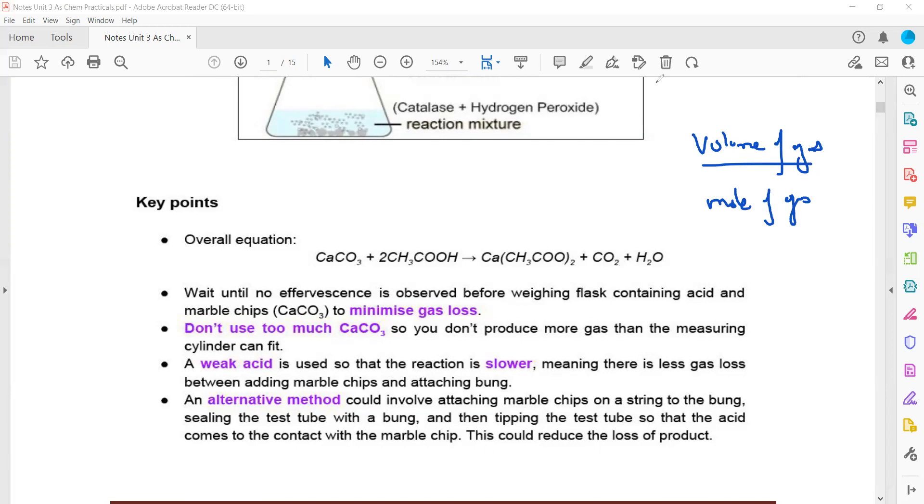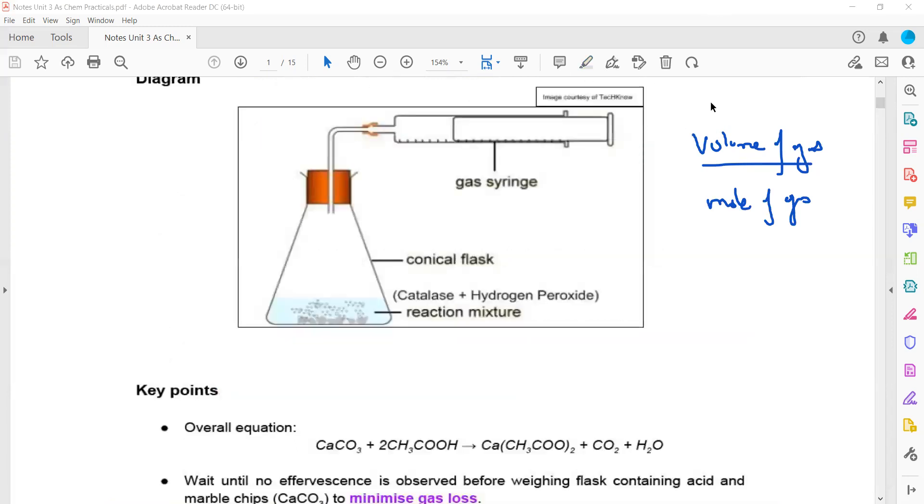The volume of gas is measured using the gas syringe. To get the moles, use the formula: moles equals mass in grams divided by molar mass. We won't directly get the moles of gas, so first we'll get the moles of the limiting reagent.